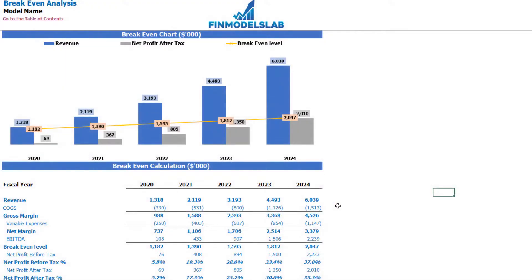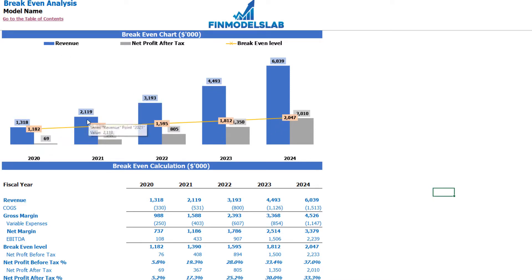On the breakeven tab you can find the calculation of the revenue breakeven level and a breakeven chart. For this particular use case, the revenue breakeven level is less than the actual revenue calculation, which means the company is profitable.